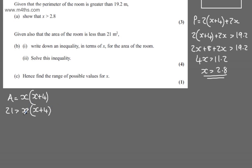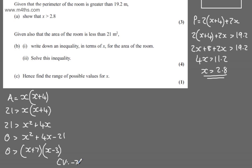So what I'm going to do here is expand the brackets on the right-hand side of the inequality. We'll have x squared plus 4x. I'm going to subtract 21 from both sides of the inequality. We've got x squared plus 4x minus 21. I can factor this quadratic inequality. I'll have (x+7)(x-3). This gives me critical values of minus 7 and positive 3.